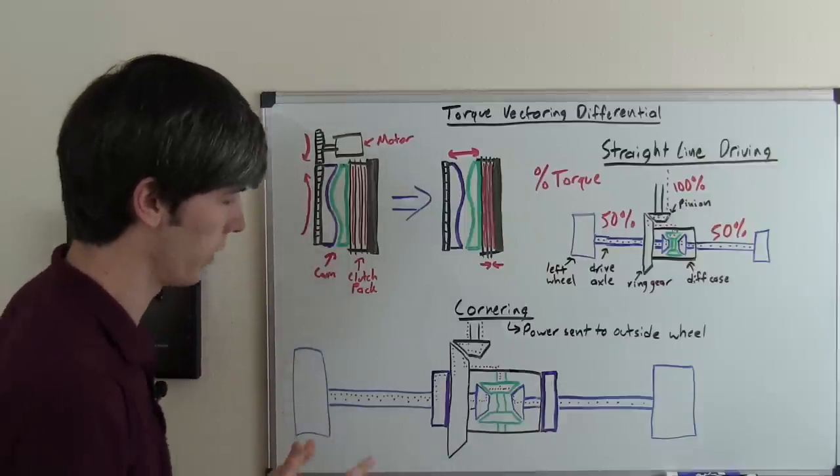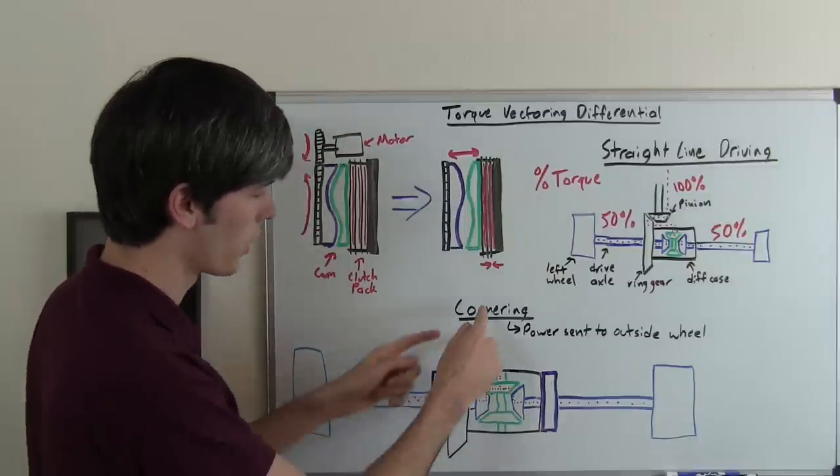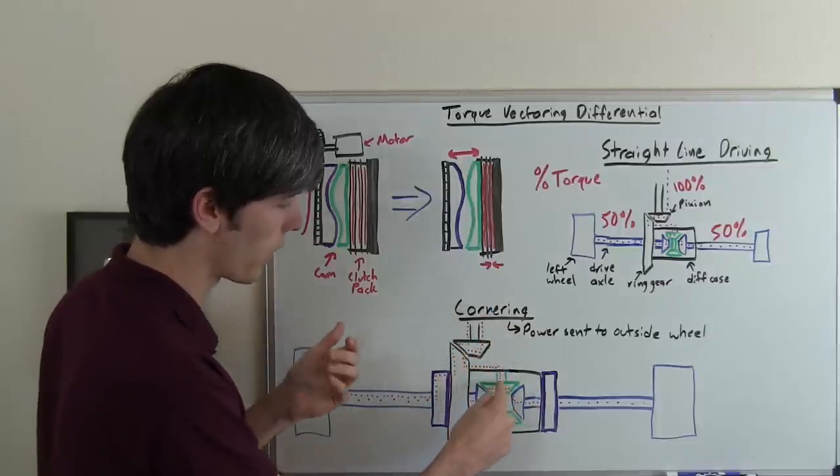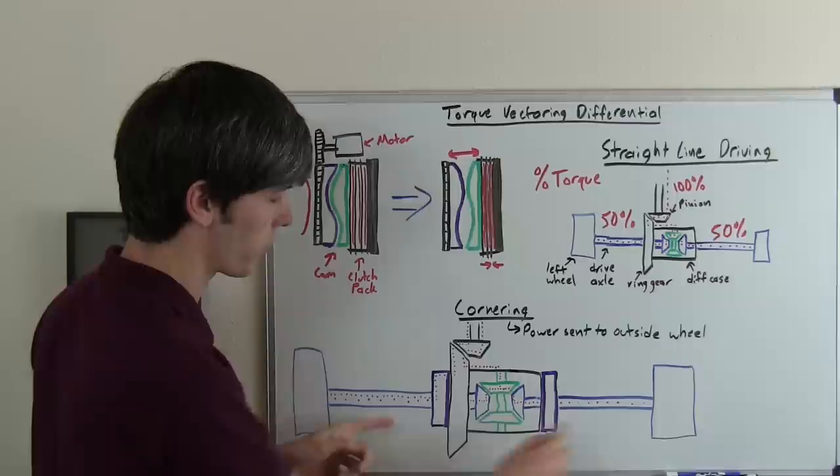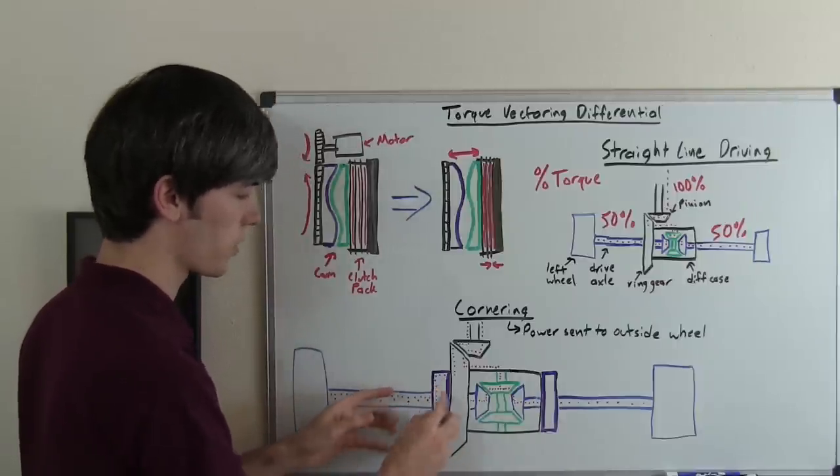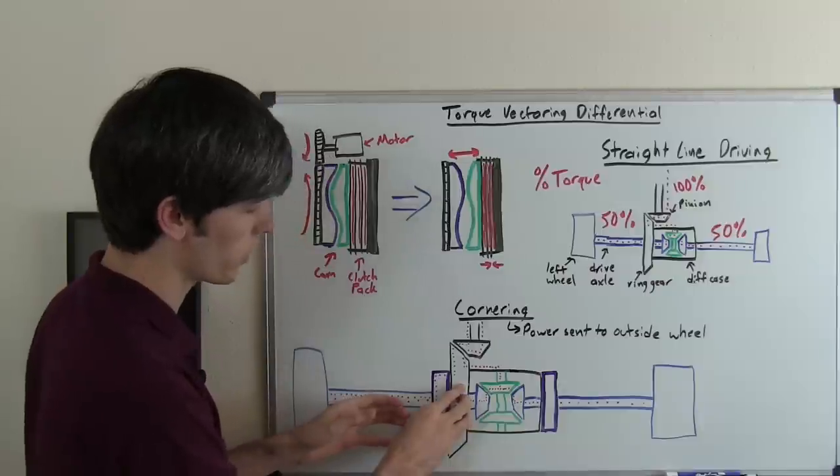So what happens is when you engage this clutch you've got your torque coming in and splitting between the two axles. Now when you engage this clutch suddenly this axle is matched directly to this differential housing.